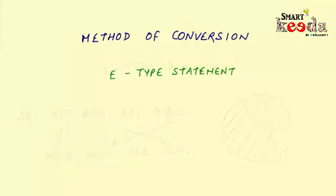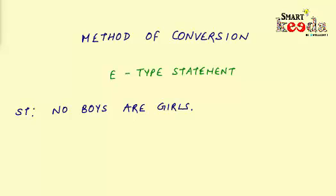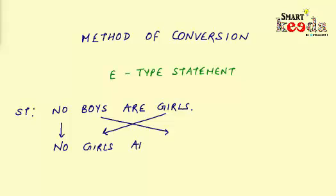Now let's look at the next type: an E-type statement. The example is: no boys are girls. If we try to convert this statement and get a conclusion out of it, the quantifier 'no' will remain the same and the classes will get interchanged, giving us the new conclusion: no girls are boys.